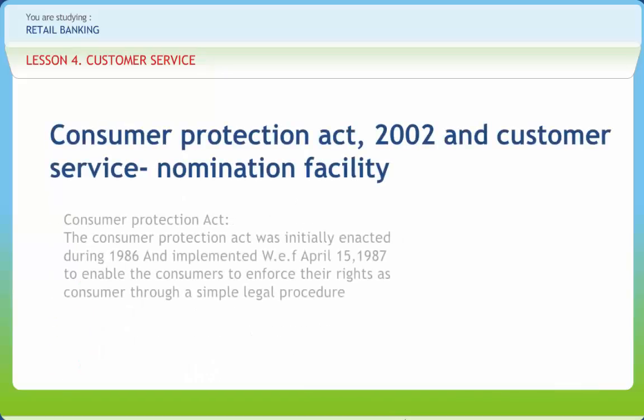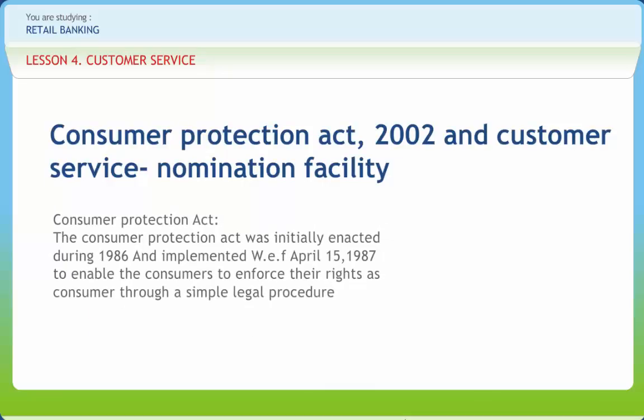The Consumer Protection Act was initially enacted during 1986 and implemented with effect from April 15, 1987, to enable consumers to enforce their rights through a simple legal procedure; it is not applicable in Jammu and Kashmir. A comprehensive amendment, the Consumer Protection Amendment Act 2002, was passed on December 17, 2002, and implemented with effect from March 15, 2003 — the World Consumer Rights Day. Any person who buys goods or services for consideration is known as a consumer; however, a person purchasing on resale is not a consumer. The Act covers all goods and services including banking.